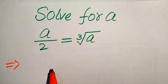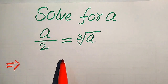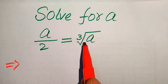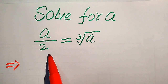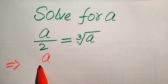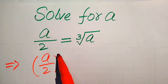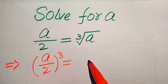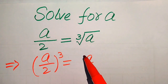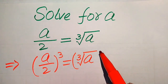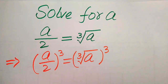In the very first step, we are going to remove the cube root. In order to remove this cube root sign we need to take a cube on both sides. When we take the cube on both sides it will be written as cube root of A whole cubed.